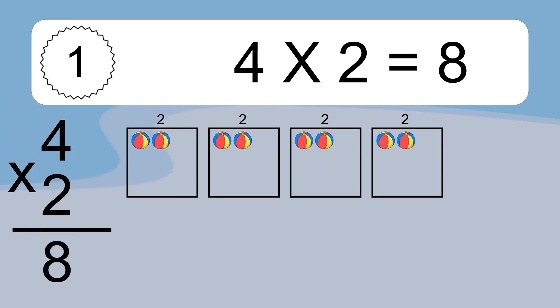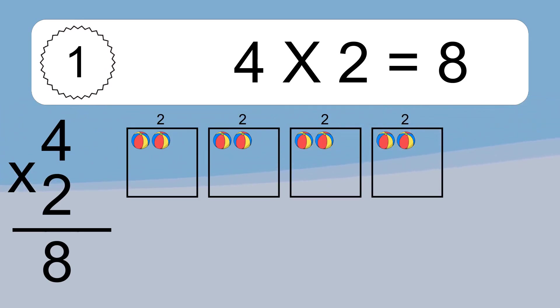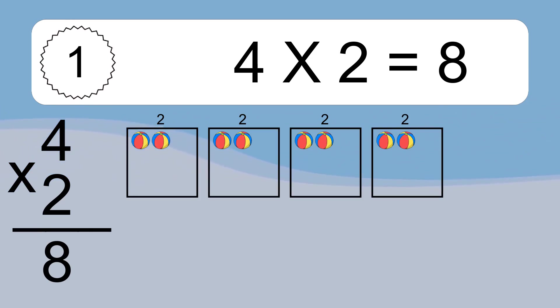We have 4 boxes, and each box has 2 colorful balls inside. If you count all the balls in all the boxes together, you will have 4 times 2 balls. This equals 8 balls.